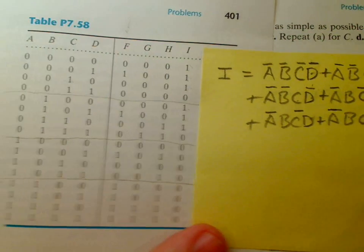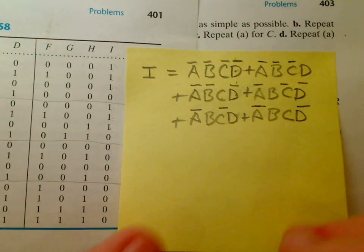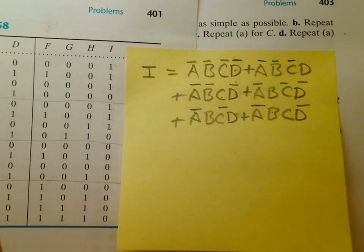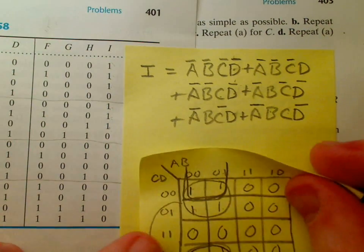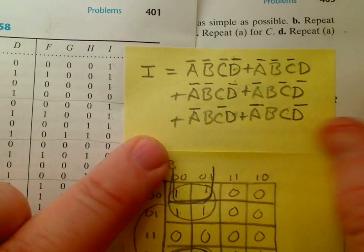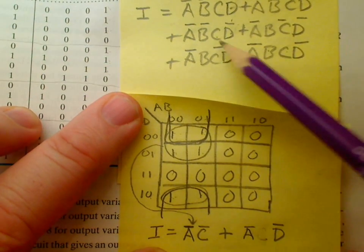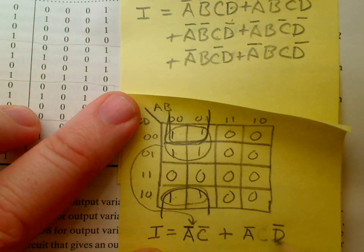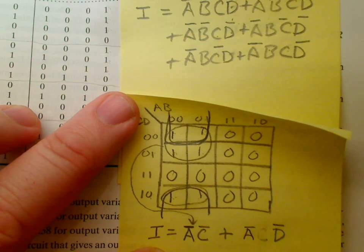So it is possible to use Boolean algebra to simplify that into this other expression that we had previously gotten with the Karnaugh map. It's possible to simplify all of this down to just that using Boolean theorems, but a Karnaugh map is a simpler way to get to the minimum circuit.